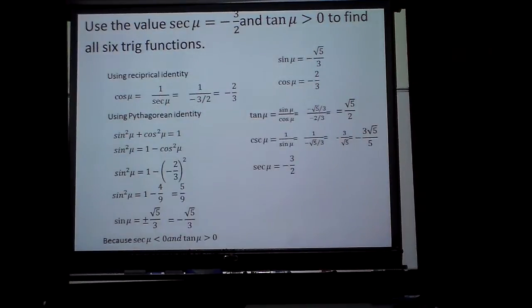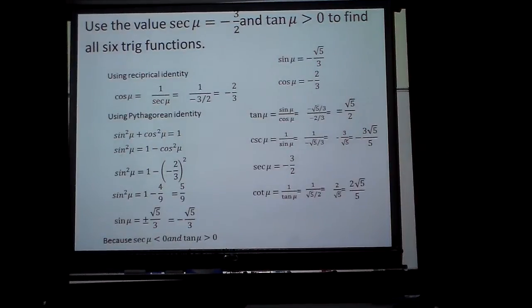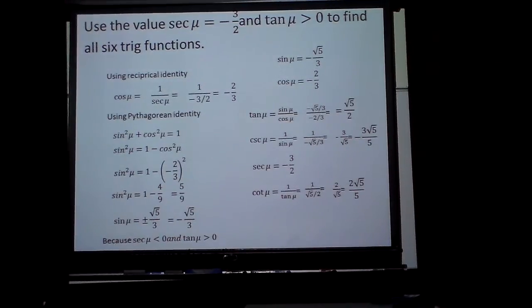And then cotangent will be the reciprocal of the tangent, which when I rationalize it will be 2 square roots of 5 over 5. There, I just found all 6 trig functions using all these identities in different ways, in different formats.